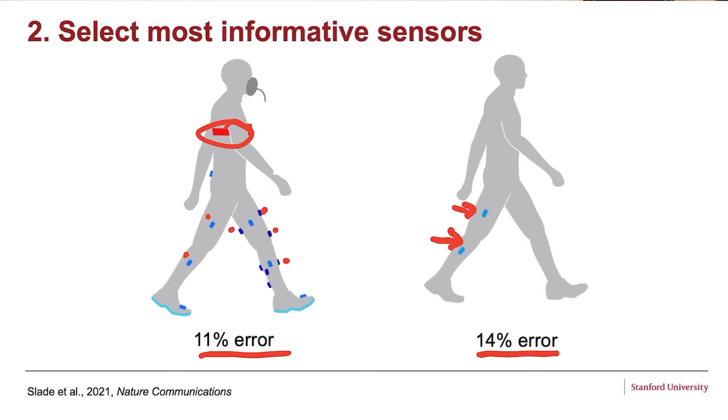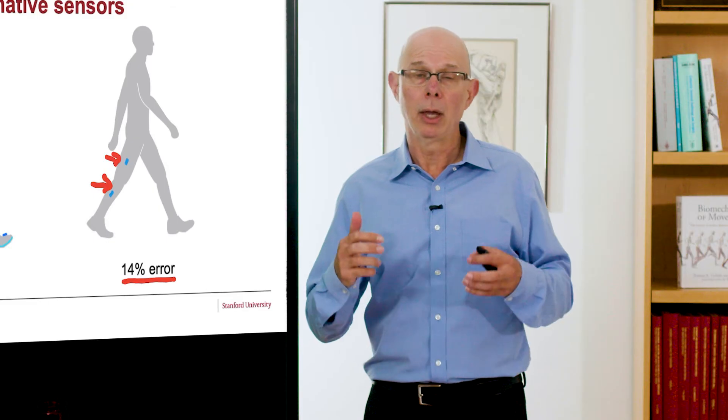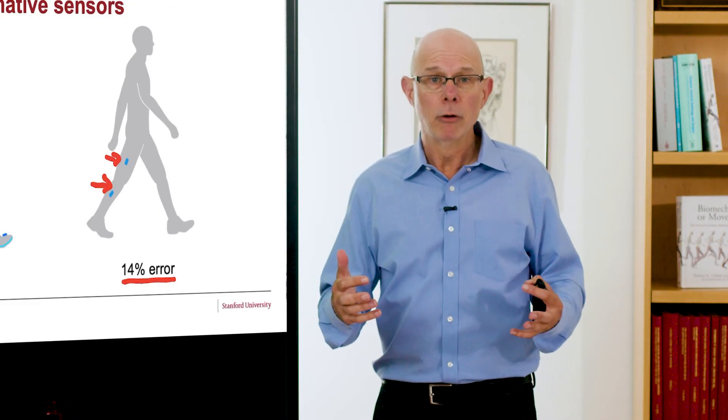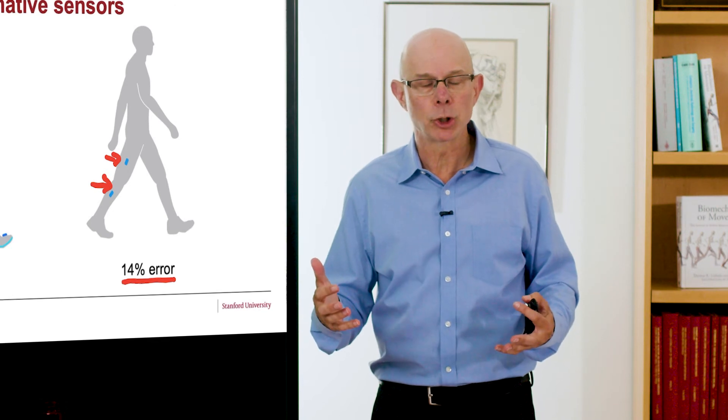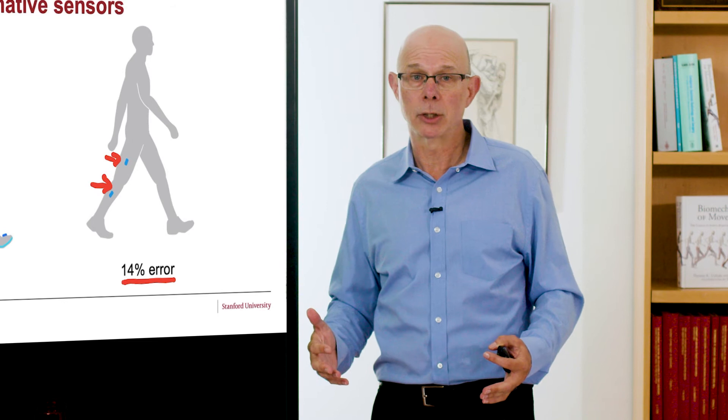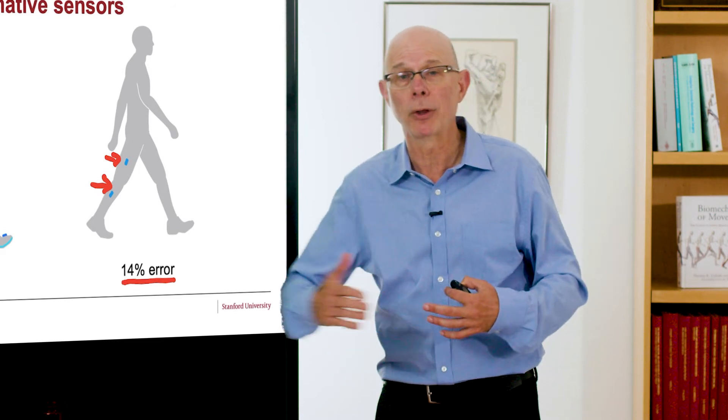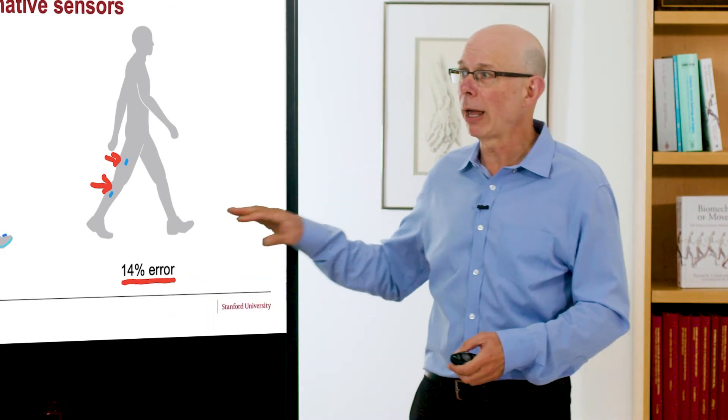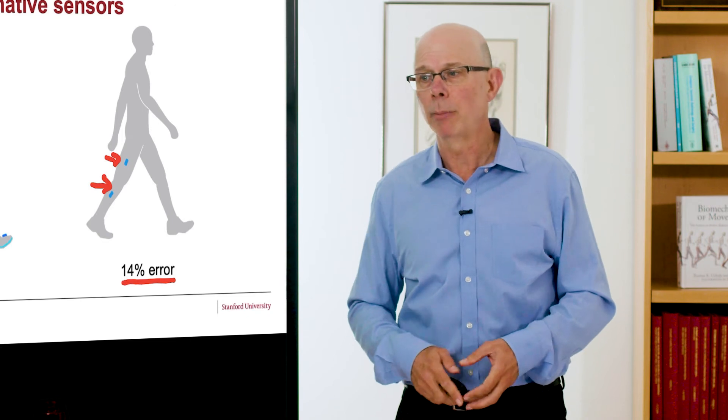So this is a real breakthrough that we can get accurate estimates with the wearable device that I just showed you could be extremely helpful for individuals that need to manage weight, for athletic training where you need to manage your energy. Frequently people will get bone stress injuries because they're not taking in enough calories for what they're burning on their runs. Here we have an accurate way to estimate how much they're burning.